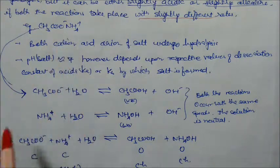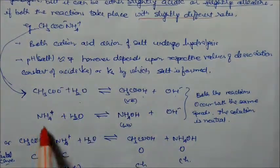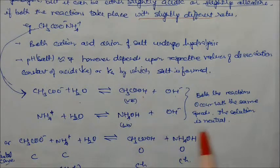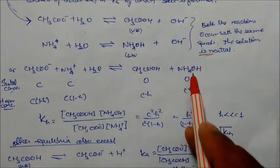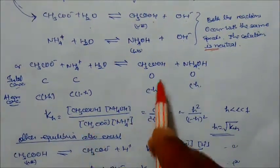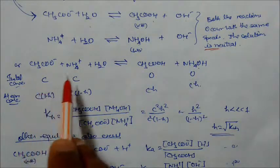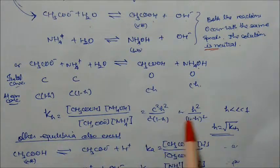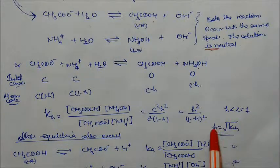Acetate reacts with water to form acetic acid + OH⁻; ammonium reacts with water to form ammonium hydroxide + H⁺. Both reactions occur at the same speed, so the solution is neutral. When ammonium acetate reacts with water together, it forms acetic acid and ammonium hydroxide — both weakly ionized. Initial concentration C for both ions; at equilibrium CH, CH, and C(1−H). KH = H² / (1−H)². If H << 1, H = √KH.